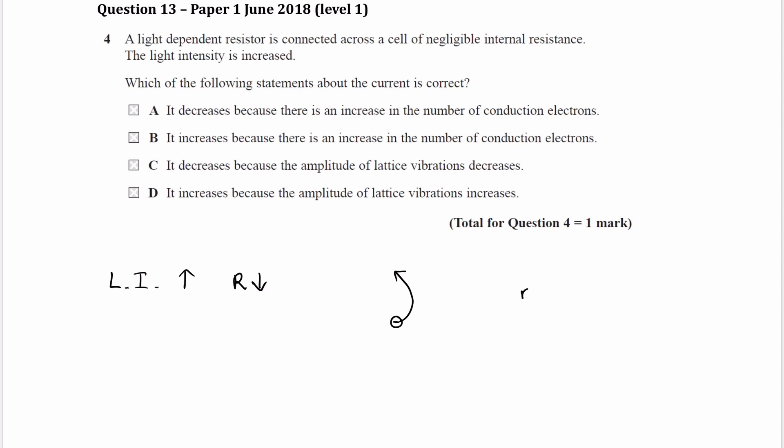As a result, your value of N, your charge carrier density, goes up. And if your charge carrier density goes up, if we think about the equation I equals NAVE, that causes the current to increase.